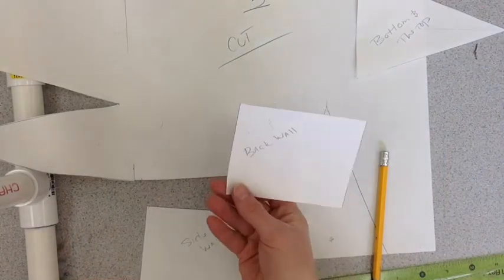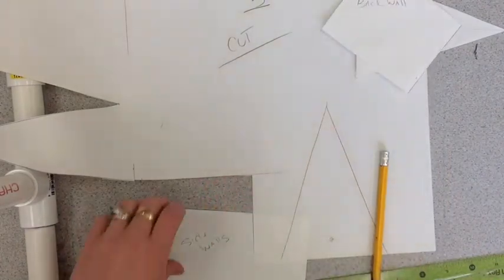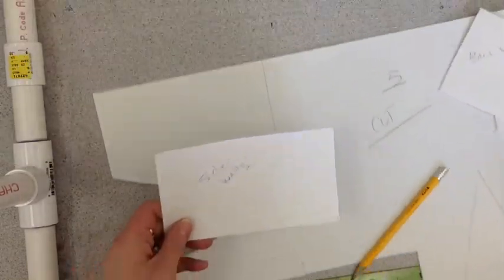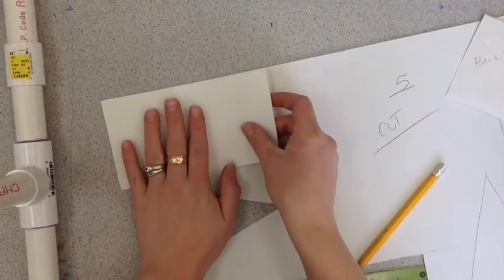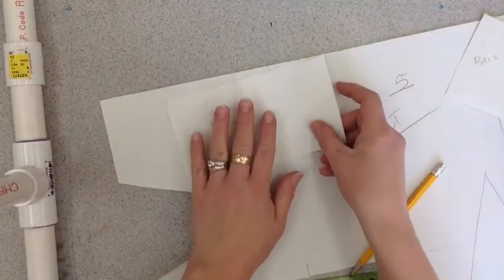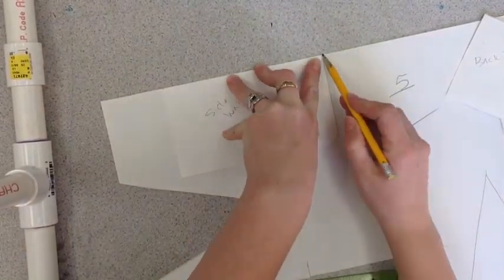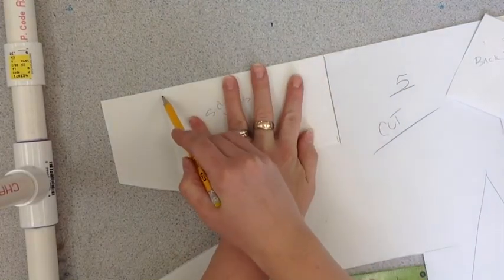I have one back wall, so I'm done. And I have two side walls. So I have one cut. I need to, I hope that doesn't fit there. Let's go here. Trace my second side wall.